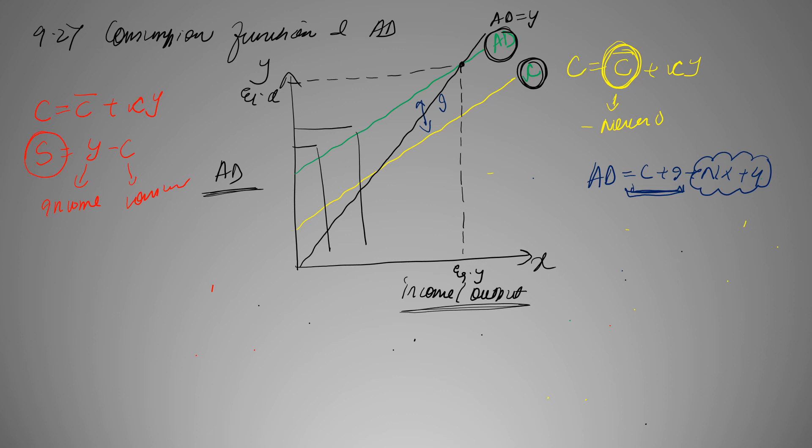And also mentioned that C always belongs in between 0 and 1. Now, if we substitute value of C over here, we get S is equal to Y minus C where C is equal to C bar plus CY. So, S is equal to Y minus autonomous C minus CY.